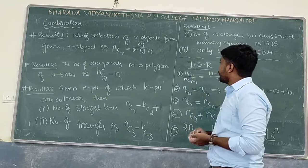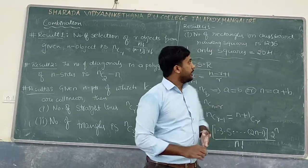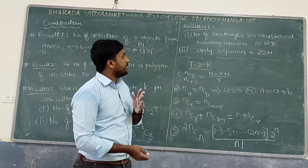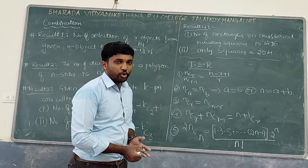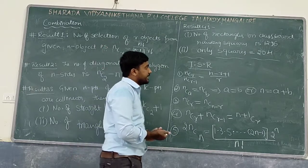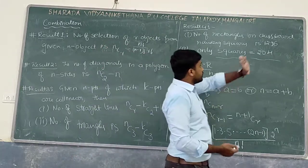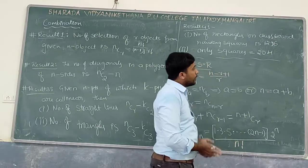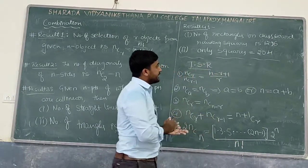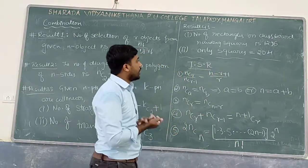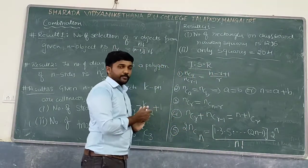Result 4: The number of rectangles on a chess board including squares is 1296. The number of only squares on a chess board is 204.